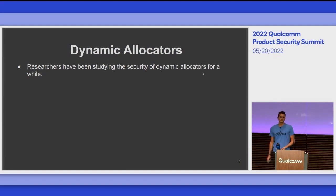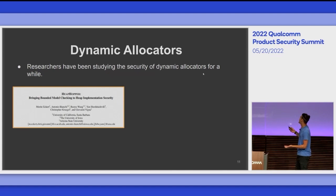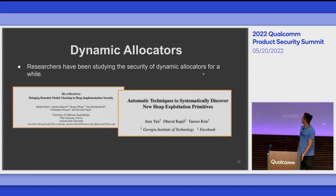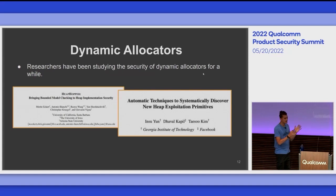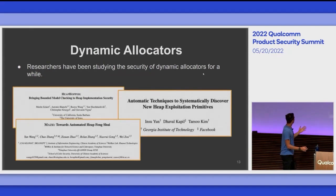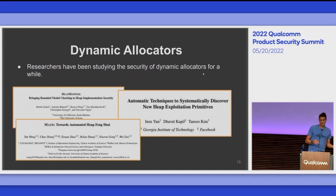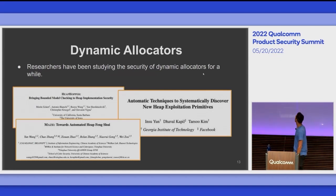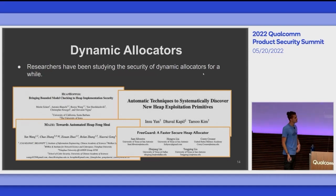Researchers from both academia and industry have been tackling this for a while, studying the security of dynamic allocators for a few years. The community came up with different solutions: one of the first was heap hopper — symbolic reasoning about the state of the heap. Other teams came up with fuzzing techniques, and people also developed heap feng shui techniques to automatically reach specific memory layouts for exploitation. Finally, there are many suggestions for safer implementations.